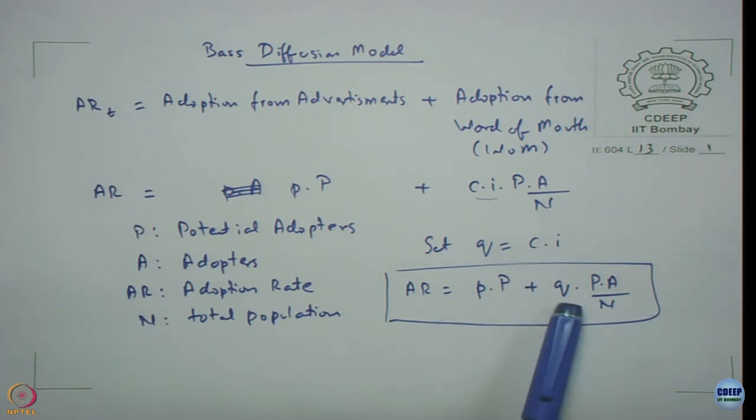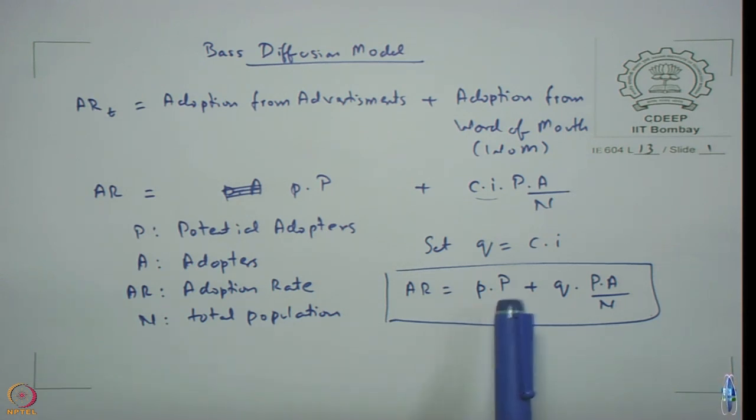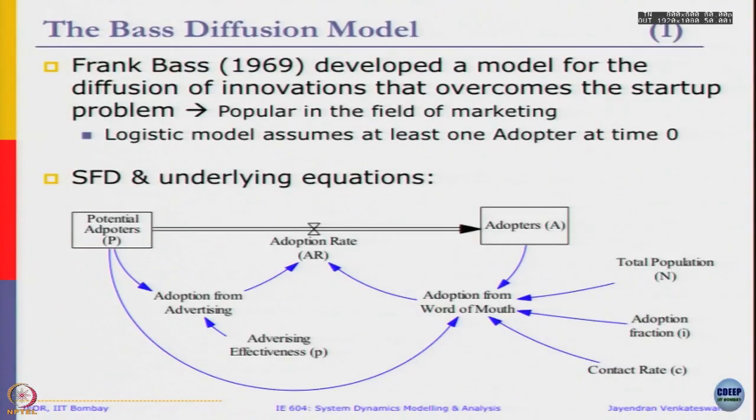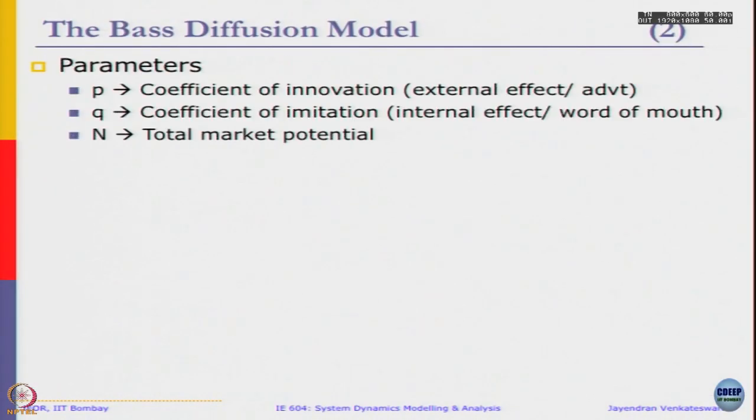This is the equation that underlies our Bass diffusion model where small p is advertising effectiveness and small q is word of mouth effectiveness, or coefficient of advertisement and coefficient of word of mouth. Given these two parameters, as you can see, even if adopters are zero, adoption rate can still occur because of some effectiveness in advertisement happens to potential adopters, whereby we can simply overcome the startup problem. Given this we can definitely model it as a SD model.